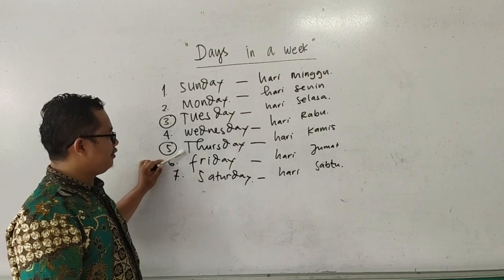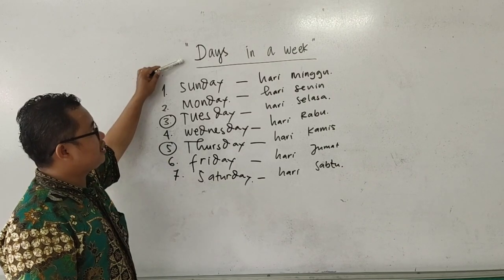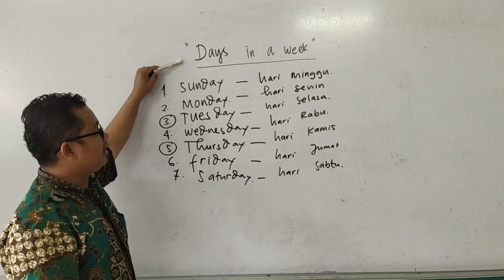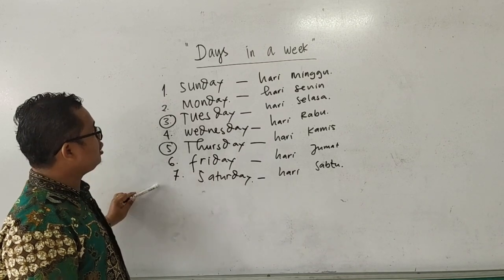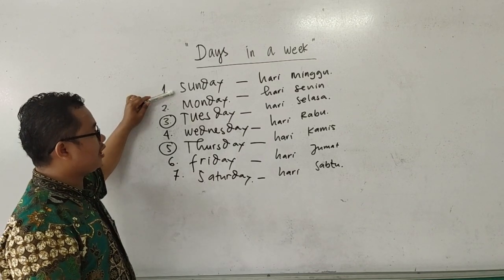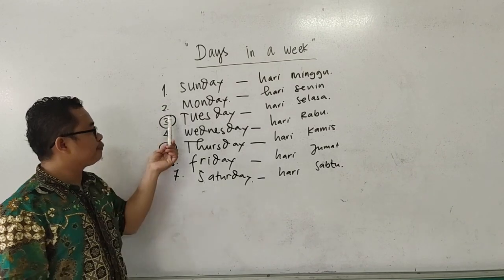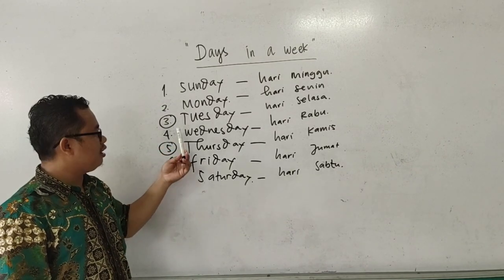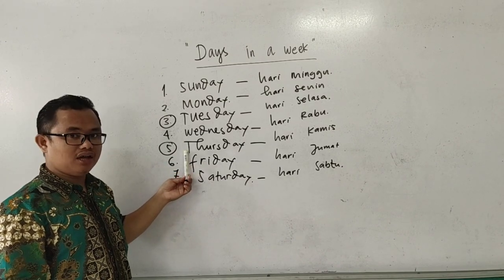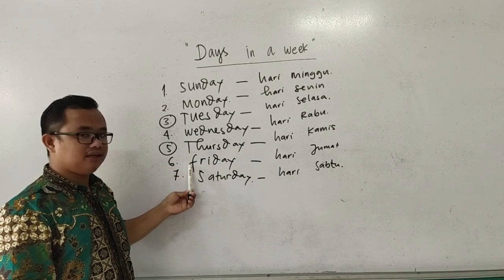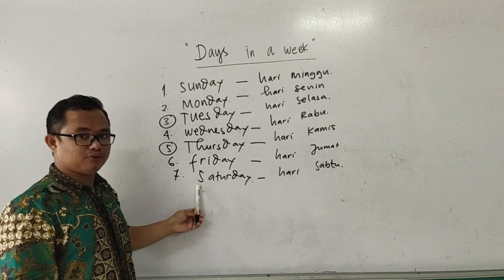Tuesday. Thursday. Okay. So this is the days in a week. Inilah hari-hari dalam satu minggu. Ada tujuh hari yaitu Sunday, hari Minggu; Monday, hari Senin; Tuesday, hari Selasa; Wednesday, hari Rabu; Thursday, hari Kamis; Friday, hari Jumat; Saturday, hari Sabtu.